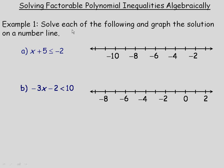On the first page we're asked to solve each of the following and graph the solution on a number line. The first one is x plus 5 is less than or equal to negative 2. We want to isolate x, so we need to get rid of this plus 5.